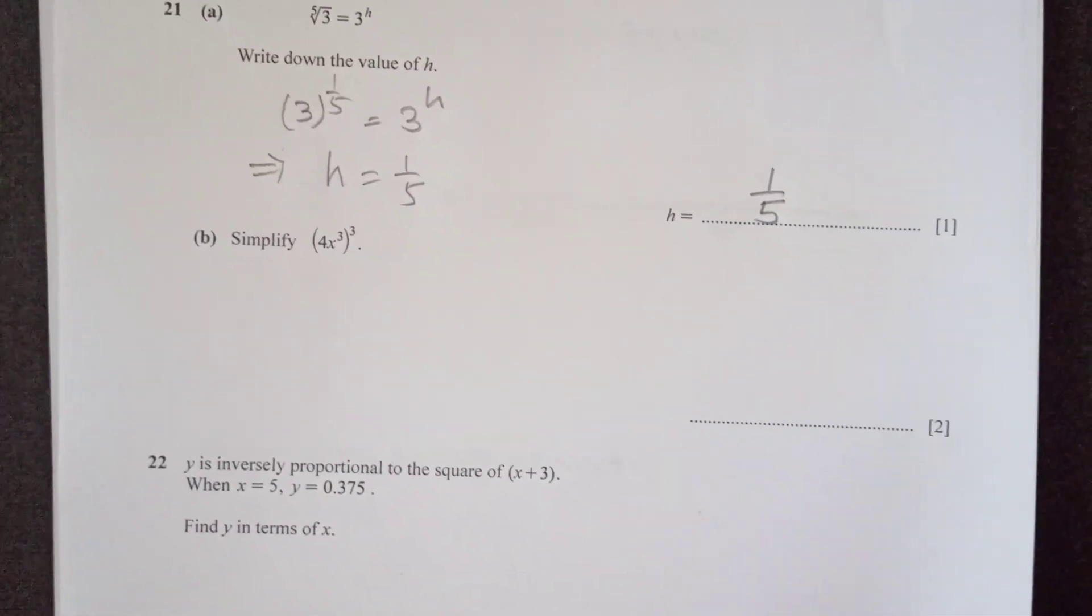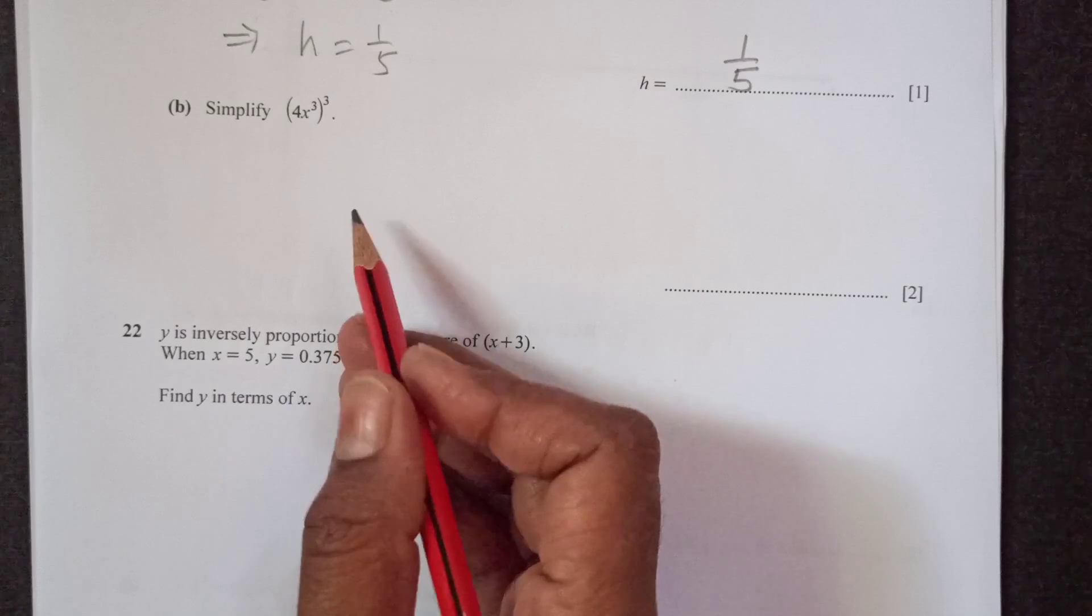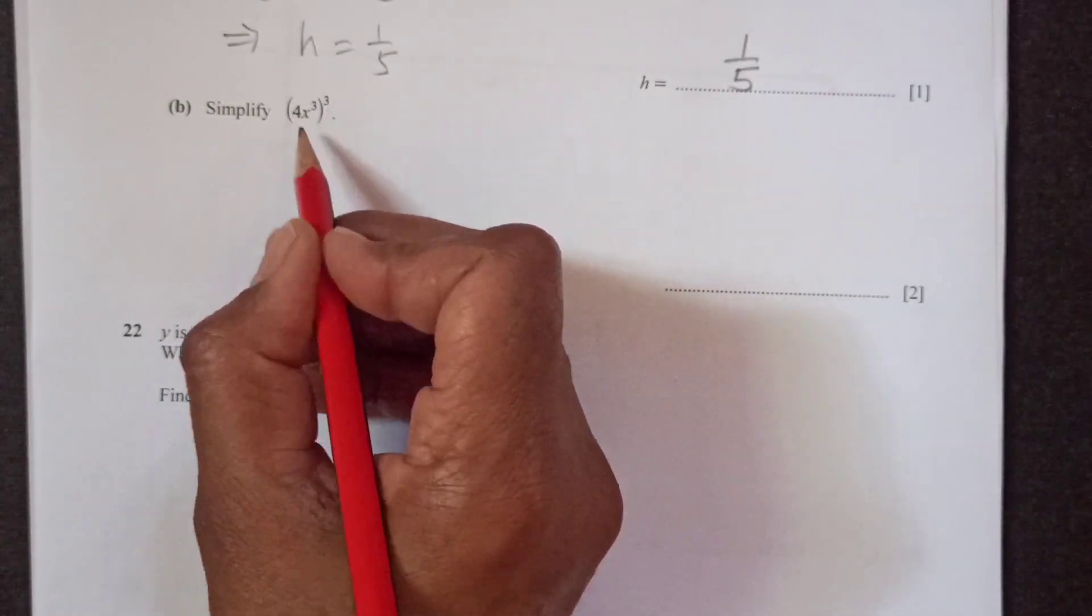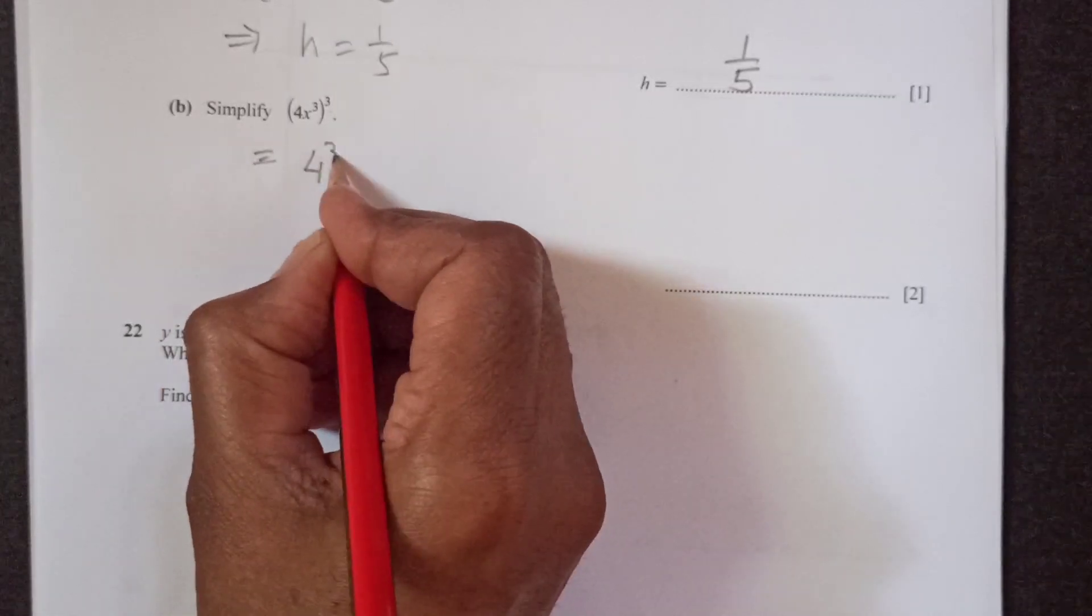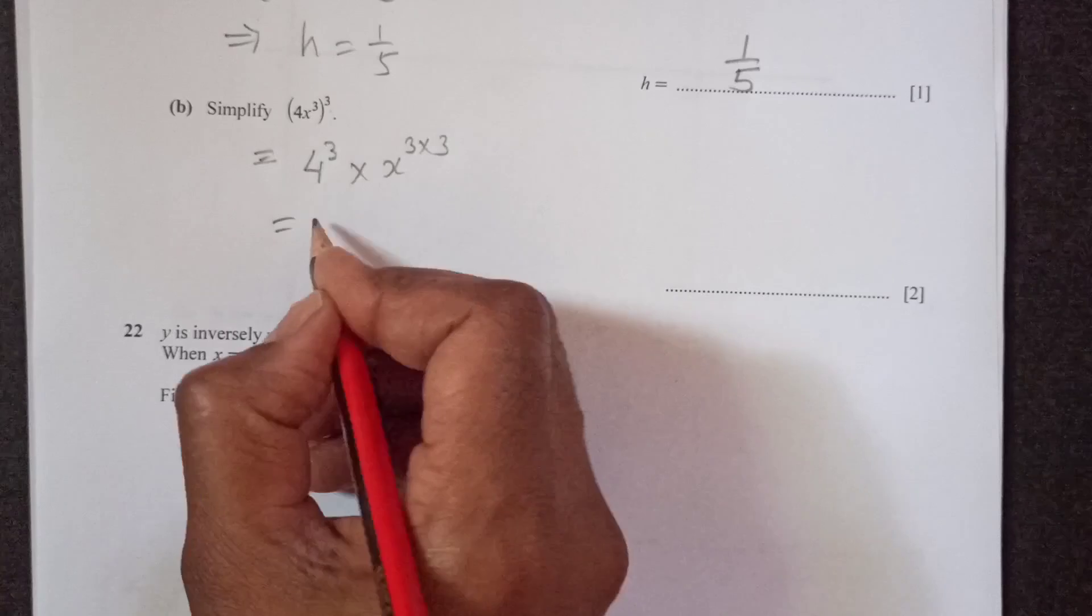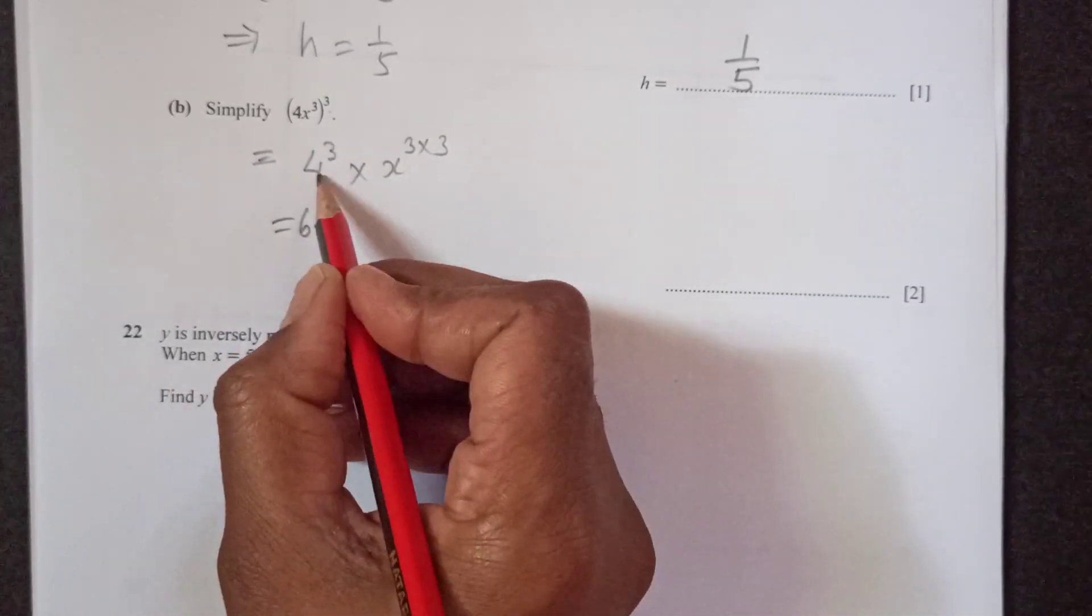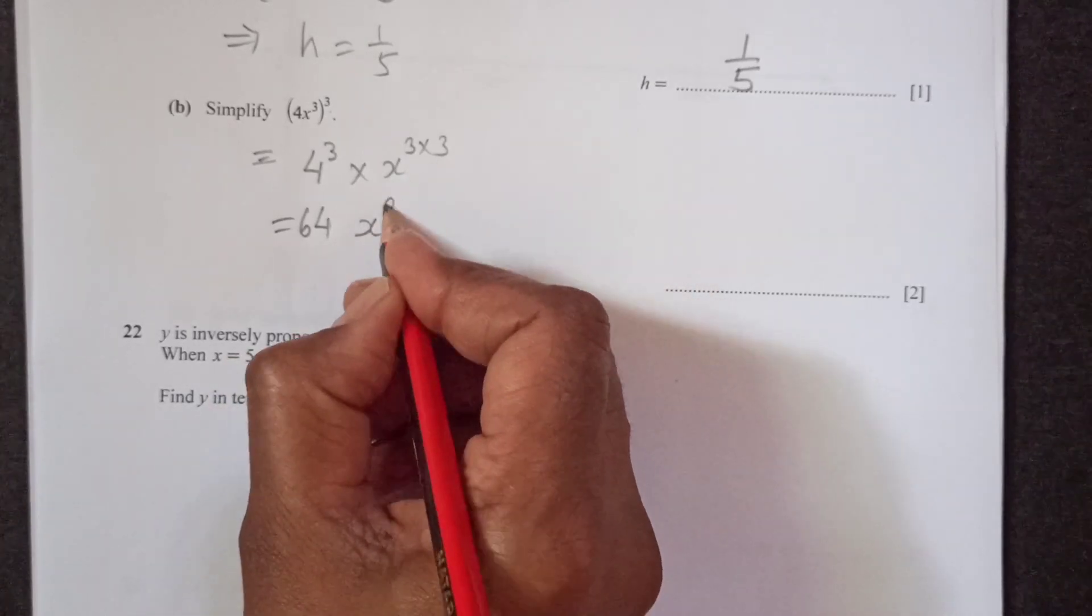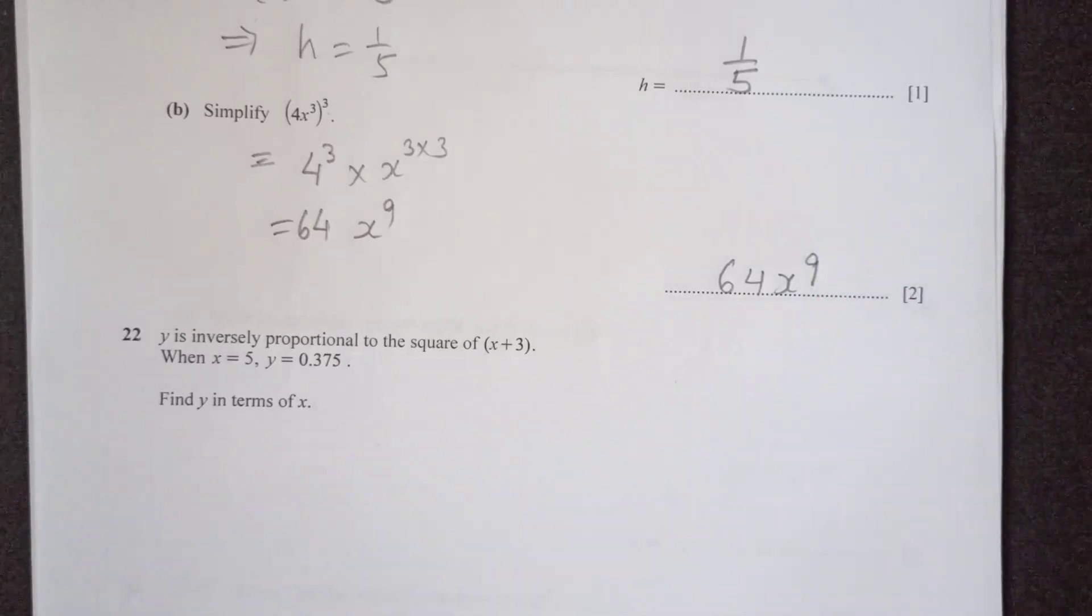Now simplify 4x cube power 3. This 3 belongs to everything, whatever is inside the bracket. So 4 cubed x cube times 3 again, 4 times 4 times 4 is 64 and x power 3 times 3, this is 9. So 64x power 9.